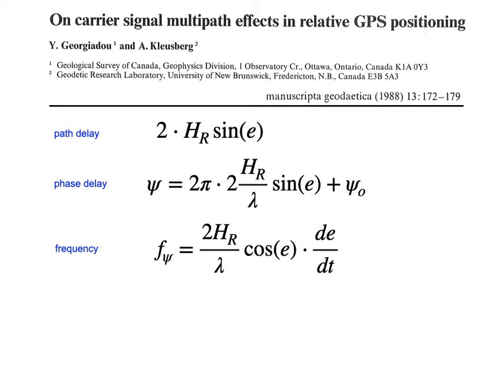That path delay causes a phase delay with a distinctive frequency: twice the reflector height divided by the transmit signal wavelength, times the cosine of the elevation angle, times the derivative of the elevation angle. You can certainly model that, but it's rarely done.